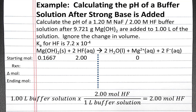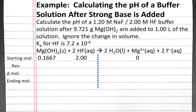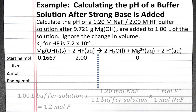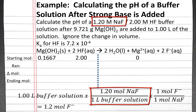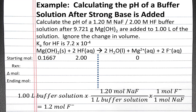To begin with, we don't have any magnesium ions, but we will have fluoride anions. To calculate the moles of fluoride anions, we'll use dimensional analysis. We have 1 liter of buffer solution, and each liter contains 1.2 moles of sodium fluoride. Since 1 mole of sodium fluoride contains 1 mole of fluoride anions, we'll have 1.2 moles of fluoride anions in our buffer solution.